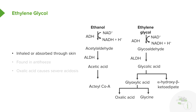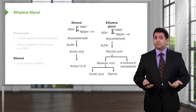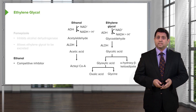Ethylene glycol is the third most common alcohol. It can be inhaled or absorbed through the skin and is often found in antifreeze. The oxalic acid byproduct can cause severe metabolic acidosis. Fomepizole, which inhibits alcohol dehydrogenase, can be used in ethylene glycol intoxication, allowing the unchanged ethylene glycol to be excreted. Ethanol can also be used as a competitive inhibitor treatment.